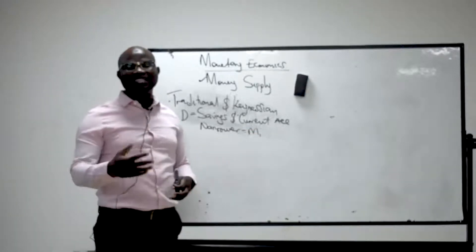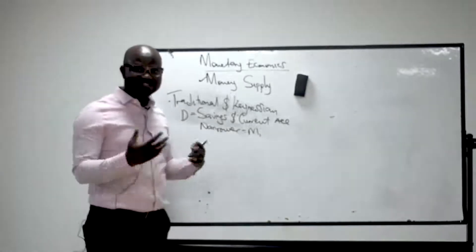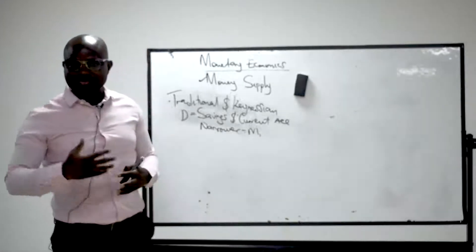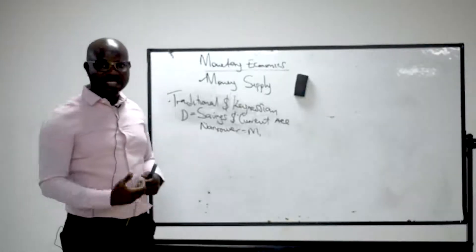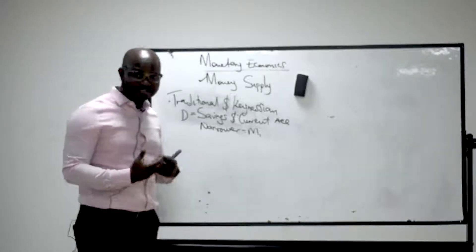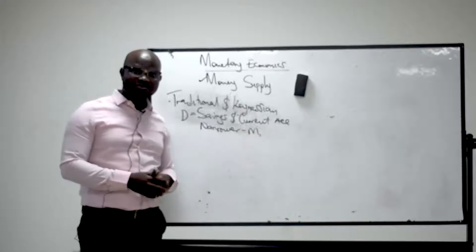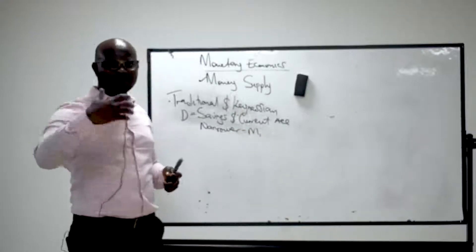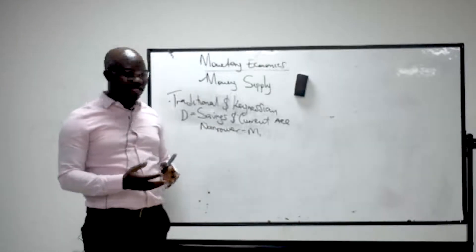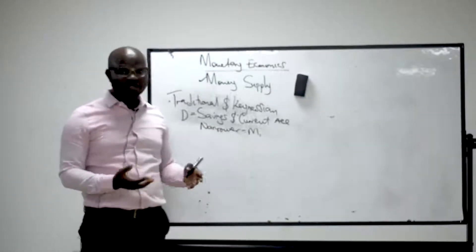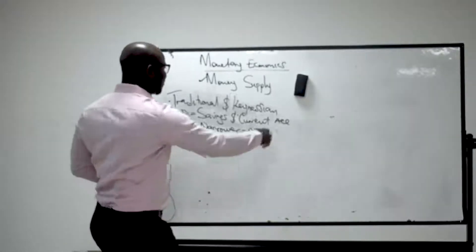They believe this is liquidity in nature — you can easily convert your savings account into cash and your current account into cash. You can enter the bank and collect your cash. That is why the money supply under M1 is the currency in the hands of the public plus the demand deposit, which includes savings and current account.